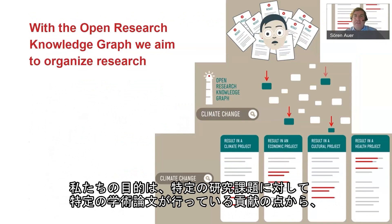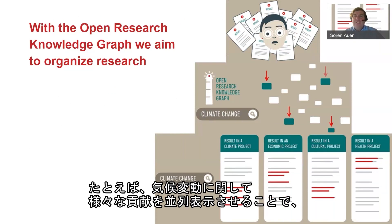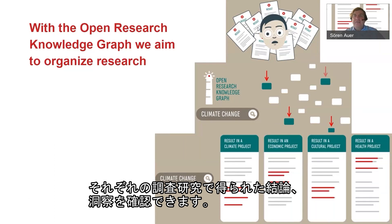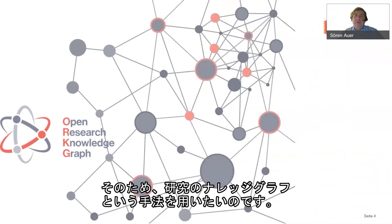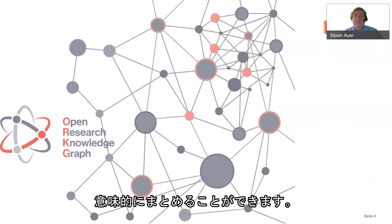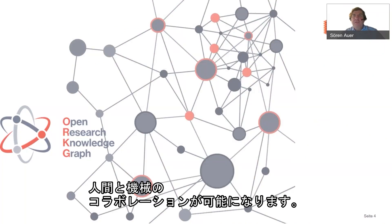We need a new mechanism to organize scientific knowledge and scientific contributions. That's exactly what we do with the Open Research Knowledge Graph, where we aim to organize research results in terms of contributions made by specific scientific articles for specific research questions — for example related to climate change — so that you can juxtapose different contributions and see the advantages, conclusions, and insights from different research studies. The knowledge graph allows structuring and semantically organizing knowledge so that it's both machine and human readable.